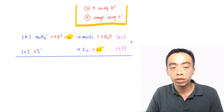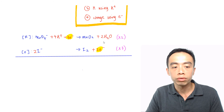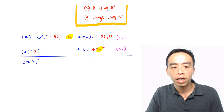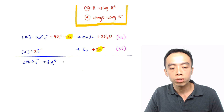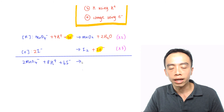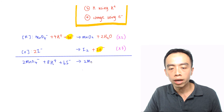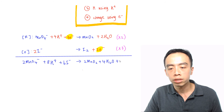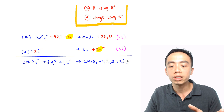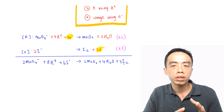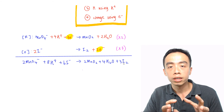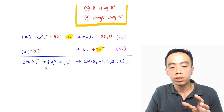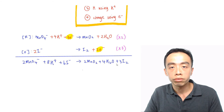Adding the two equations together: the reduction half equation doubled gives 2MnO4- and 8H+ on the reactant side. The oxidation half equation tripled gives 6I-. Electrons cancel. Products: 2MnO2, 4 water (2 water doubled), and 3I2. We then look for common terms to cancel — usually water and H+, since these were introduced by the half equation method. In this case there are no common species to cancel, so this is the balanced redox reaction in acidic medium.